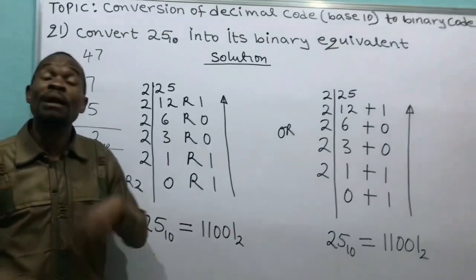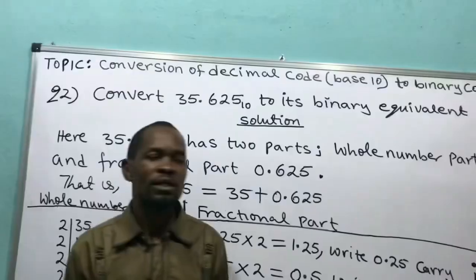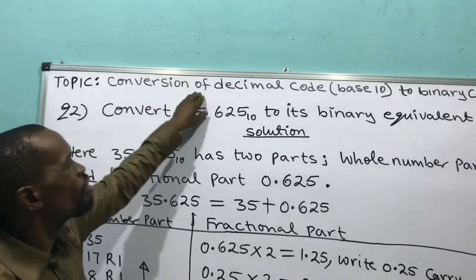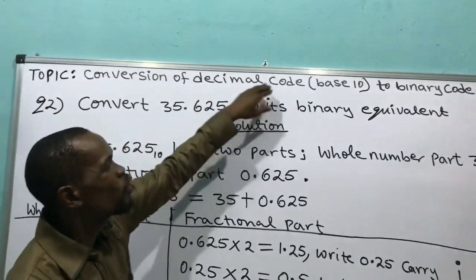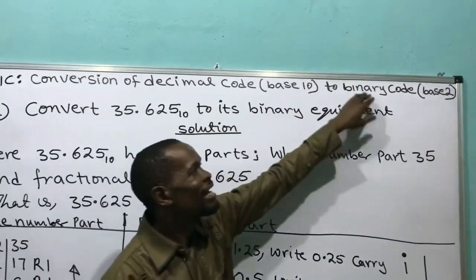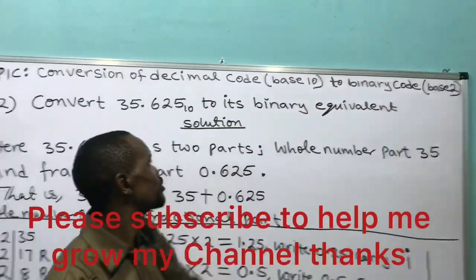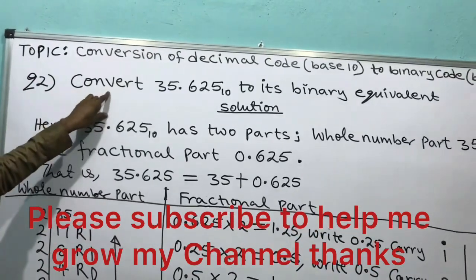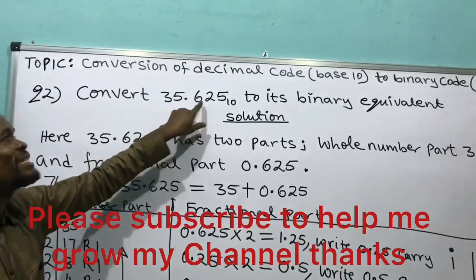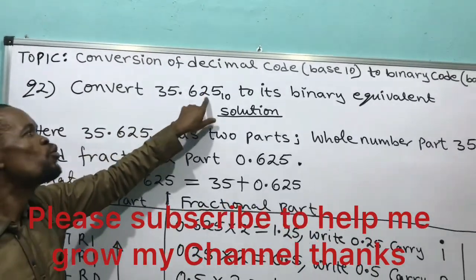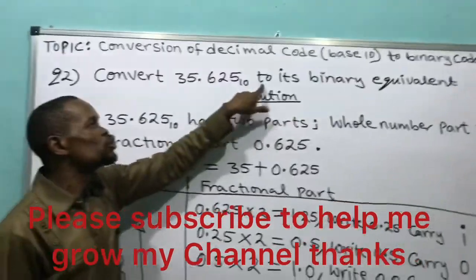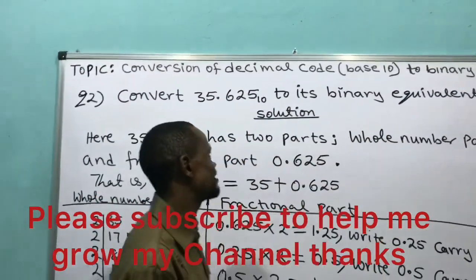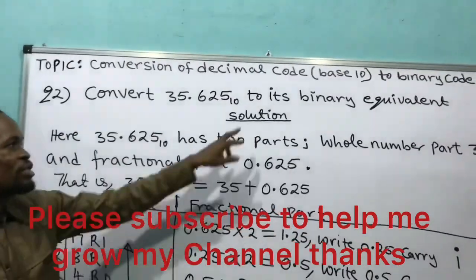Can we go to question number 2? We are still on the topic: conversion of decimal code base 10 to binary code base 2. Question number 2 says: convert 35.625 base 10 to its binary equivalent.